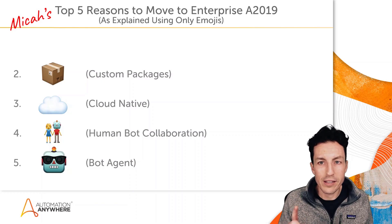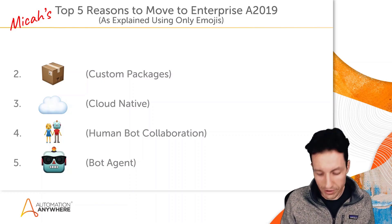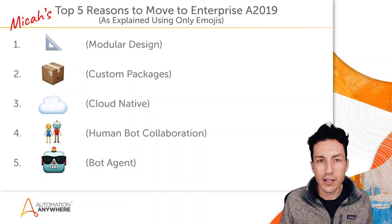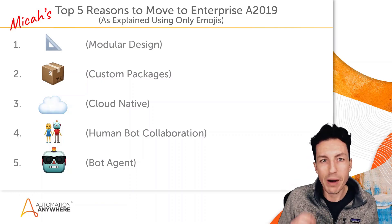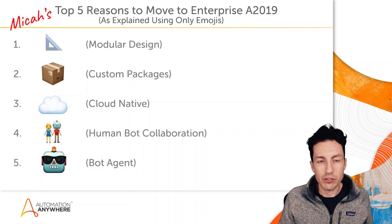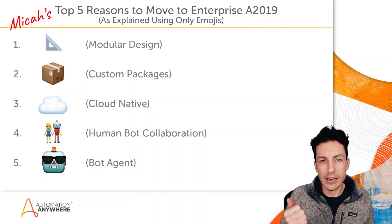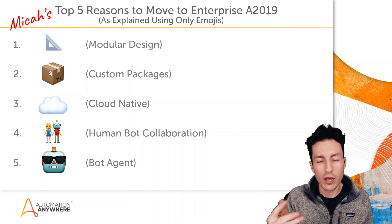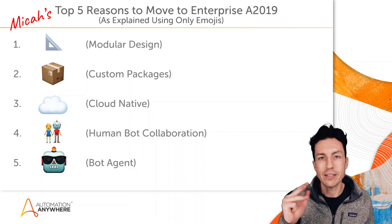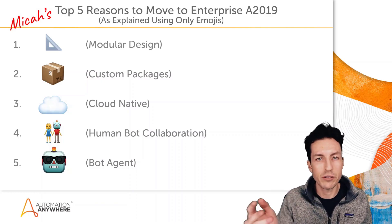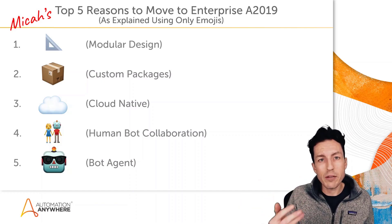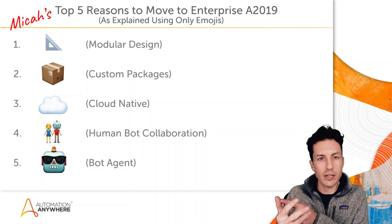Number one reason to move to Enterprise A 2019 — my favorite feature — is modular design. If I build a bot today using the Salesforce package, an if package, the error handler, and the message box, I test it, it works perfectly, I deploy it to prod, and it runs on my unattended bot runner. Six months from now there will likely be new versions of each of those packages.